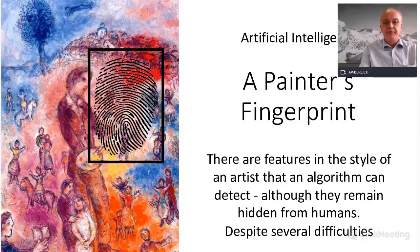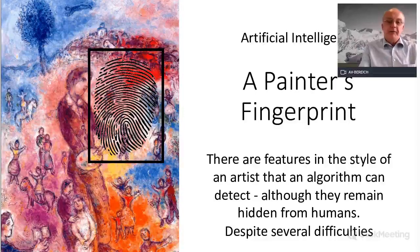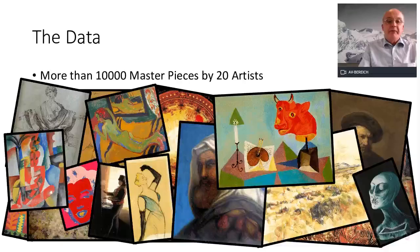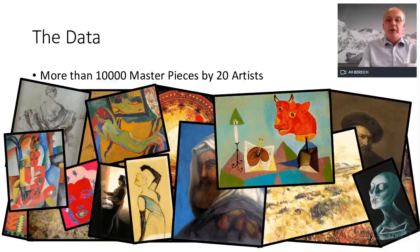I started off with about 400 images of four painters and used various methods like Bayesian inference. After two or three months, I realized there was no way around getting into machine learning. I did courses mainly on Coursera — Andrew Ng's specializations — and developed the model further. At the moment there are about 10,016 artworks by 20 artists.